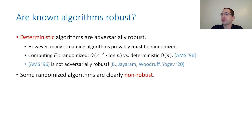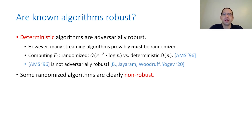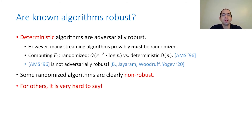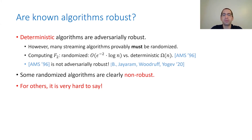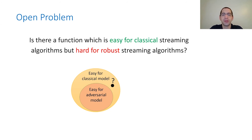If an algorithm uses a simple hash function that can be learned and exploited, it might become non-robust. For many algorithms in the literature it's not easy to understand whether they are robust or not — it may depend on the parameters of the problem or other factors.